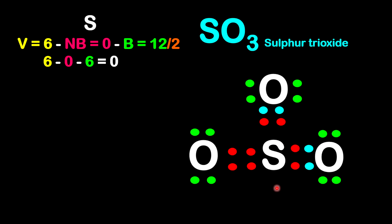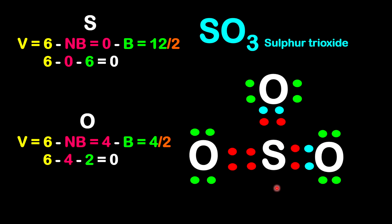Now all the oxygen atoms are the same — double bond each, with only 4 non-bonding electrons. Valence electron is 6, non-bonding electrons is 4, bonding electrons is 4 around each oxygen, divided by 2. So 6 minus 4 minus 2 equals 0. So all the atoms in this structure now have 0 charge. This is a more stable form of sulfur trioxide, and this will be our best Lewis dot structure.